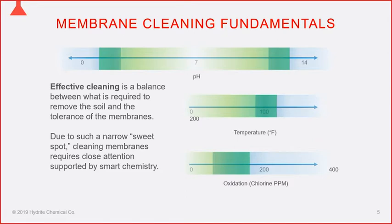When using chemicals such as chlorine or other oxidizers, concentrations have to be monitored to ensure they're in the effective range. If they're too high they can damage the membranes; if they get used up during cleaning, incremental additions must be made to ensure cleaning effectiveness. You can't just hit the start button on the CIP and walk away.